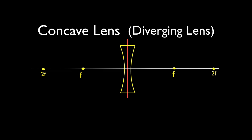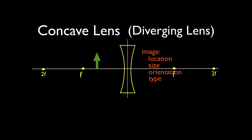By the end of the video, wherever we locate the object — that green arrow is the object — we want to be able to say where the image is going to be, whether we put the object at F, inside, between, or beyond 2F. For the image, we want to be able to draw the ray diagrams and then say what the location, size, orientation, and type of the image would be. You should really know what your answer is going to be before you even draw the ray diagrams, so you can draw them properly and know what's going on ahead of time.